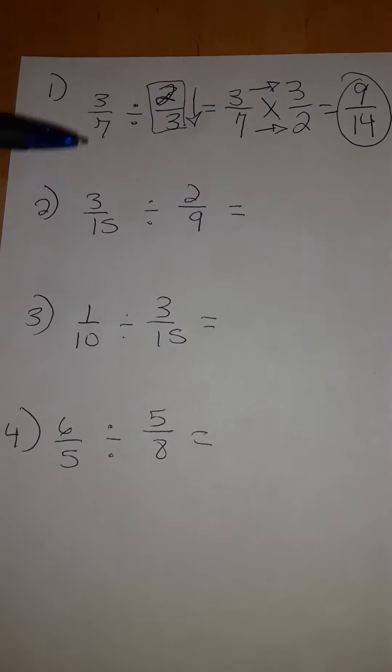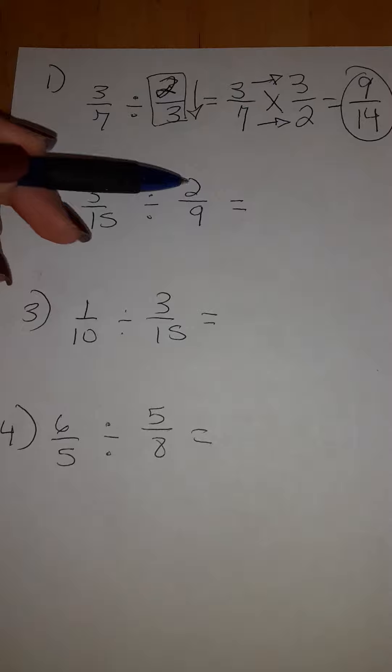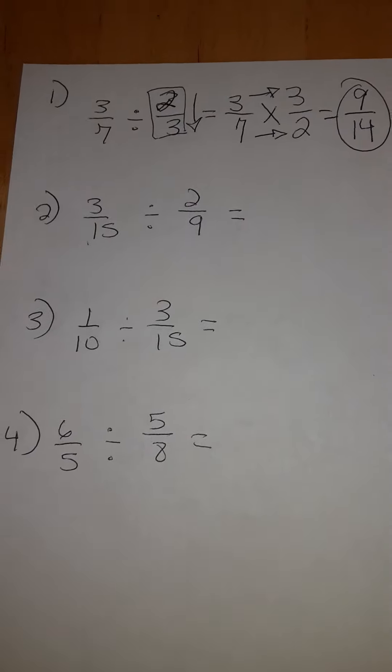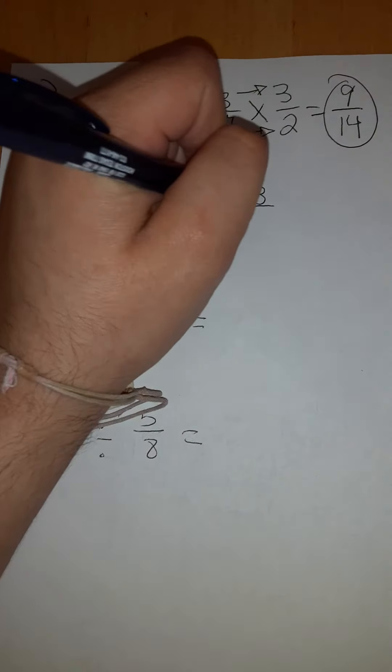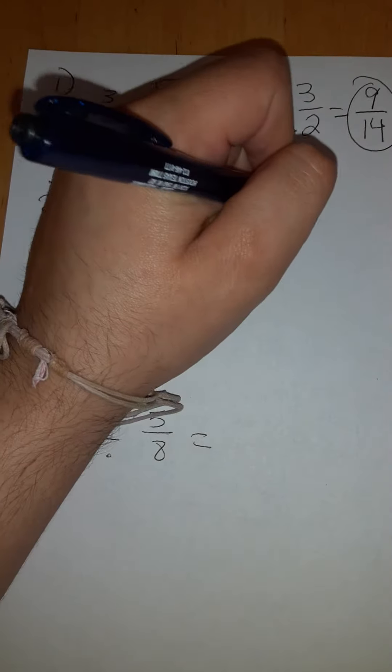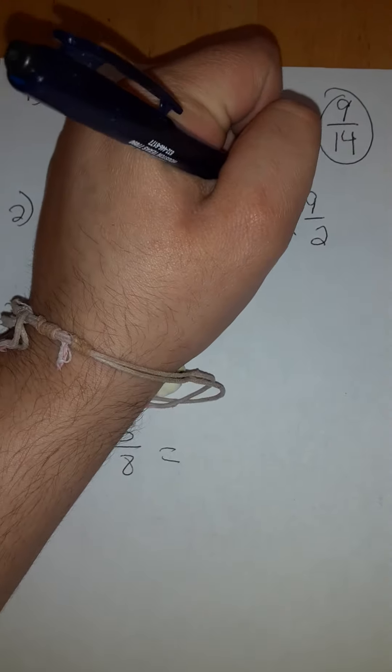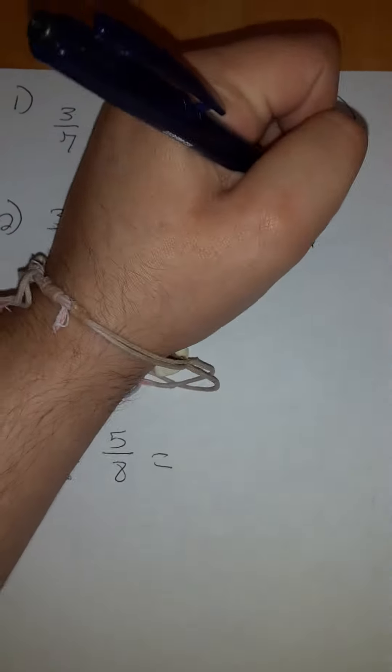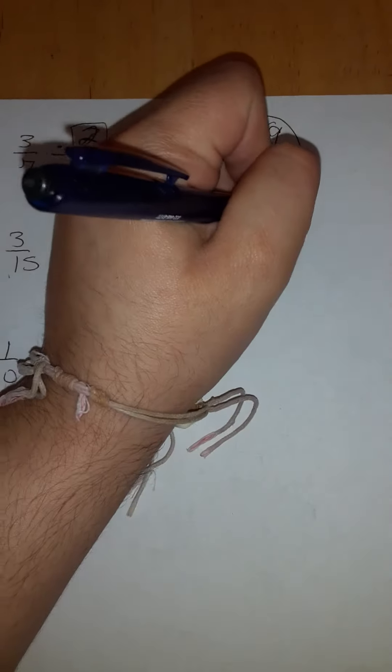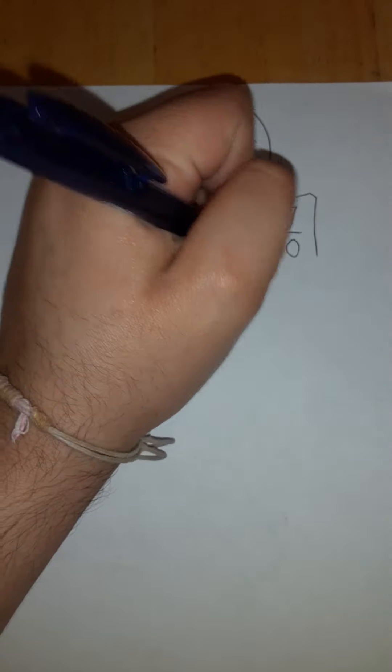Number 2. We have 3 over 15 divided by 2 over 9. Let's rewrite it. 3 over 15 times 9 over 2. Multiply across and we get 27 over 30. That's your answer.